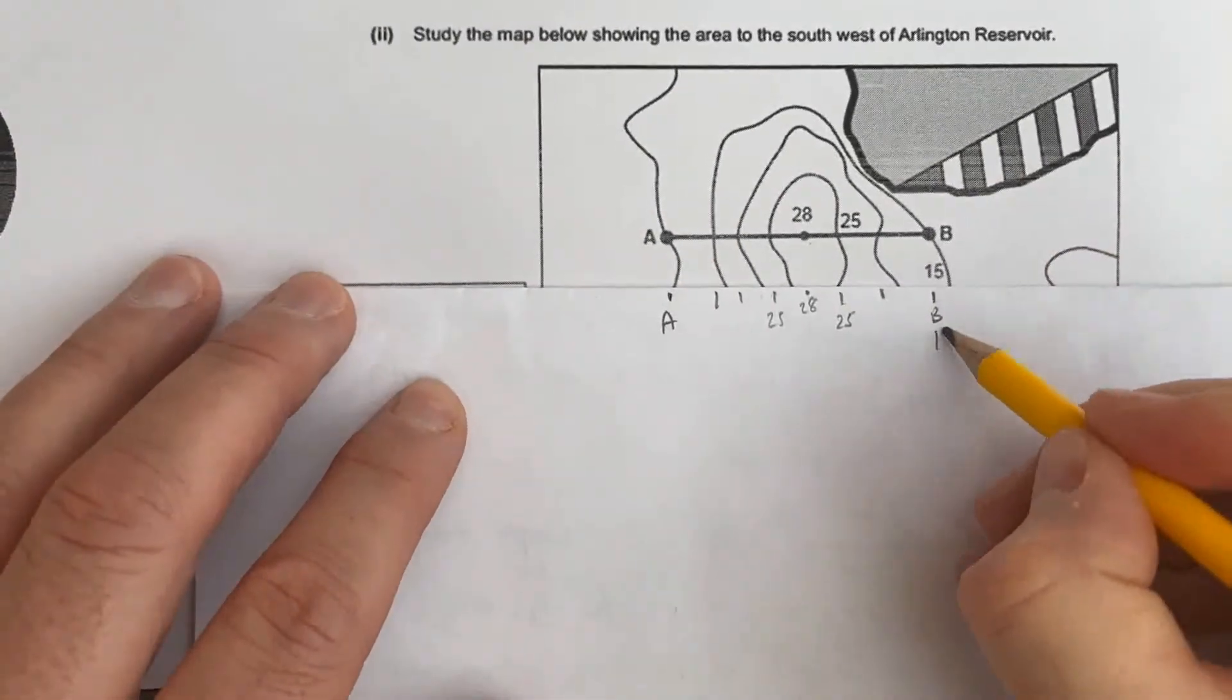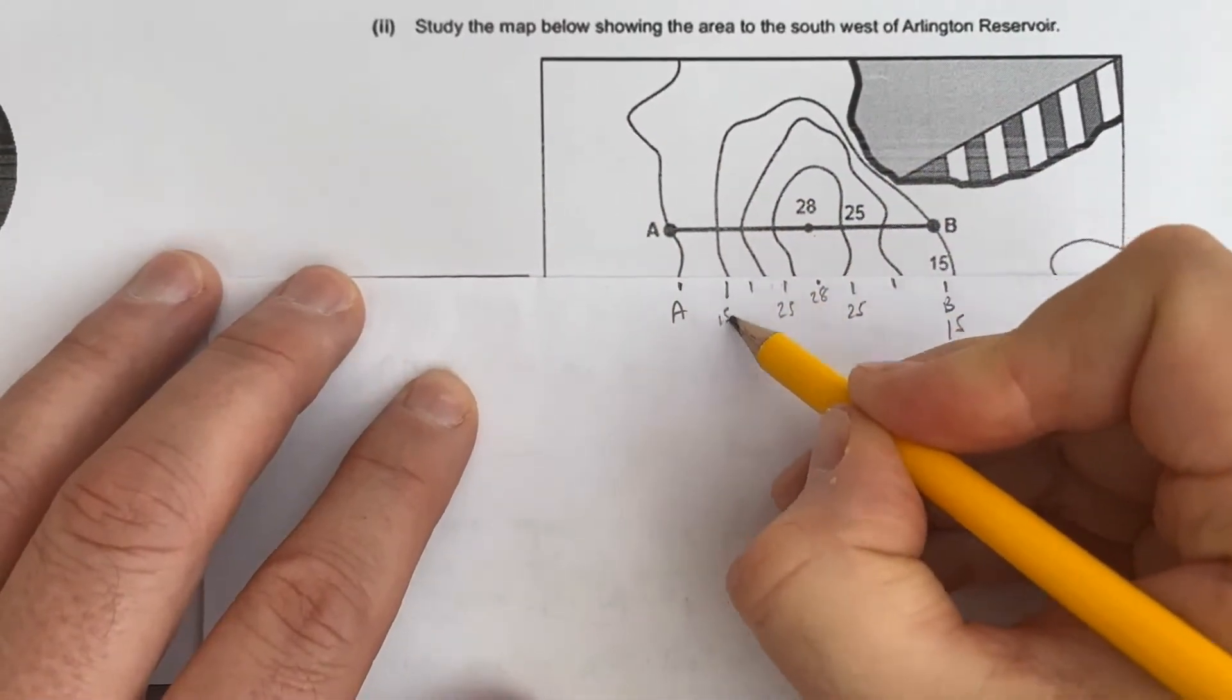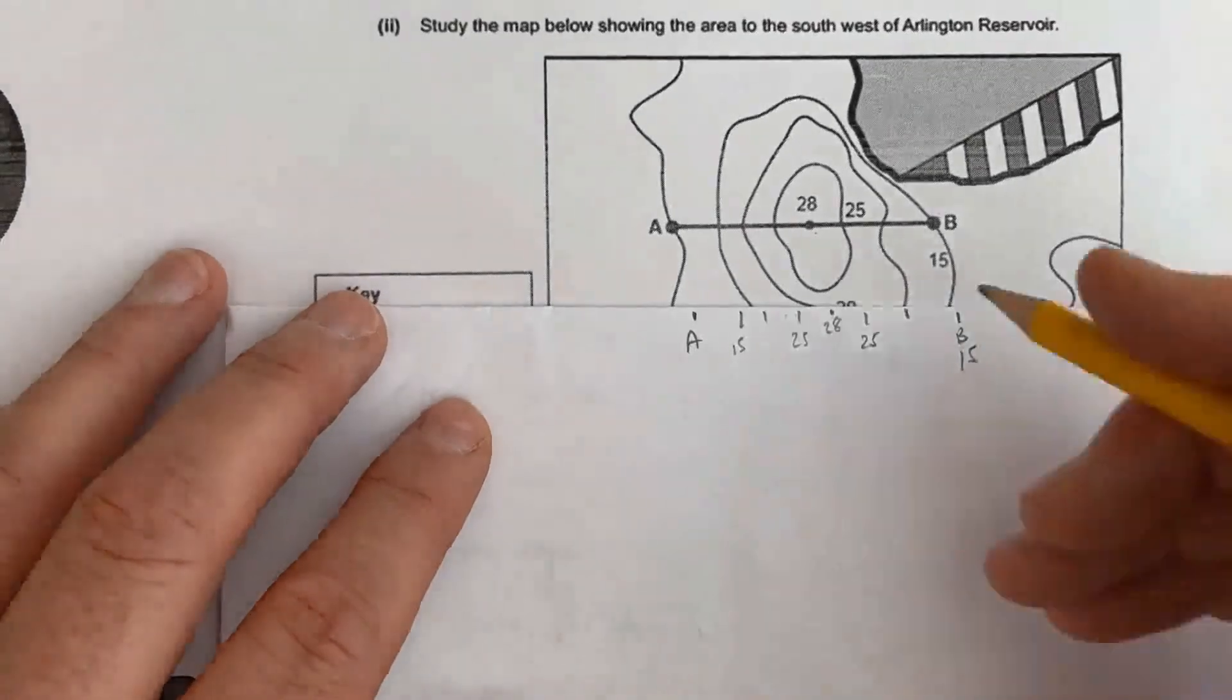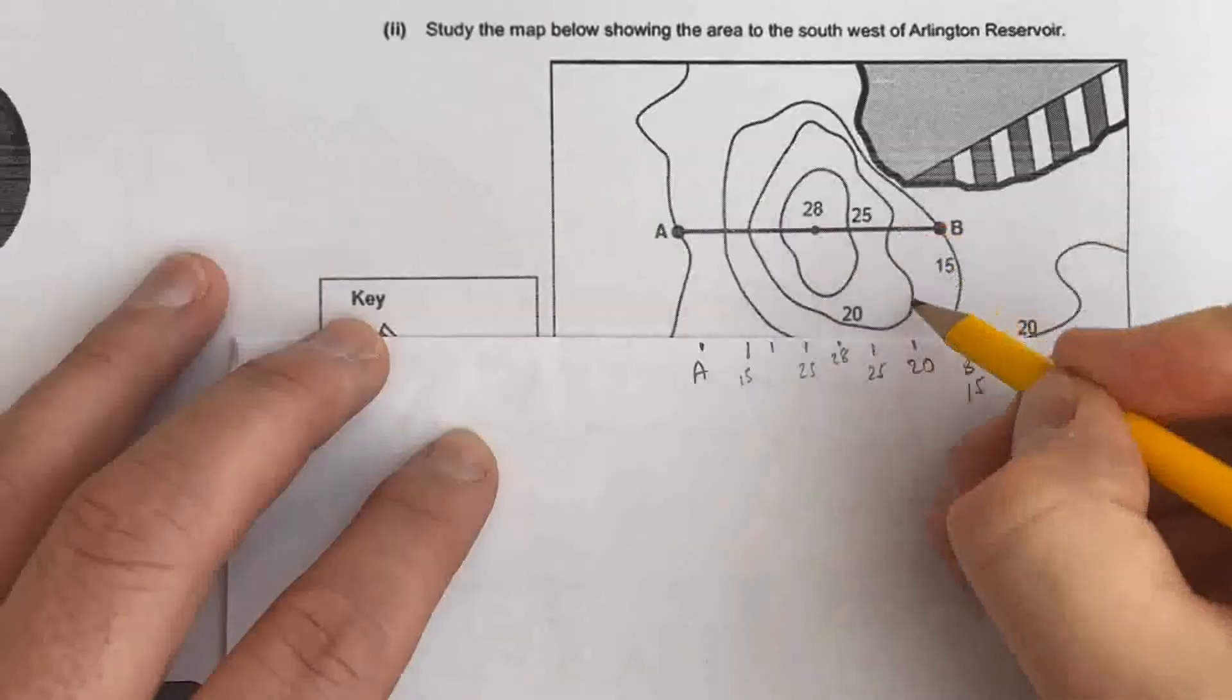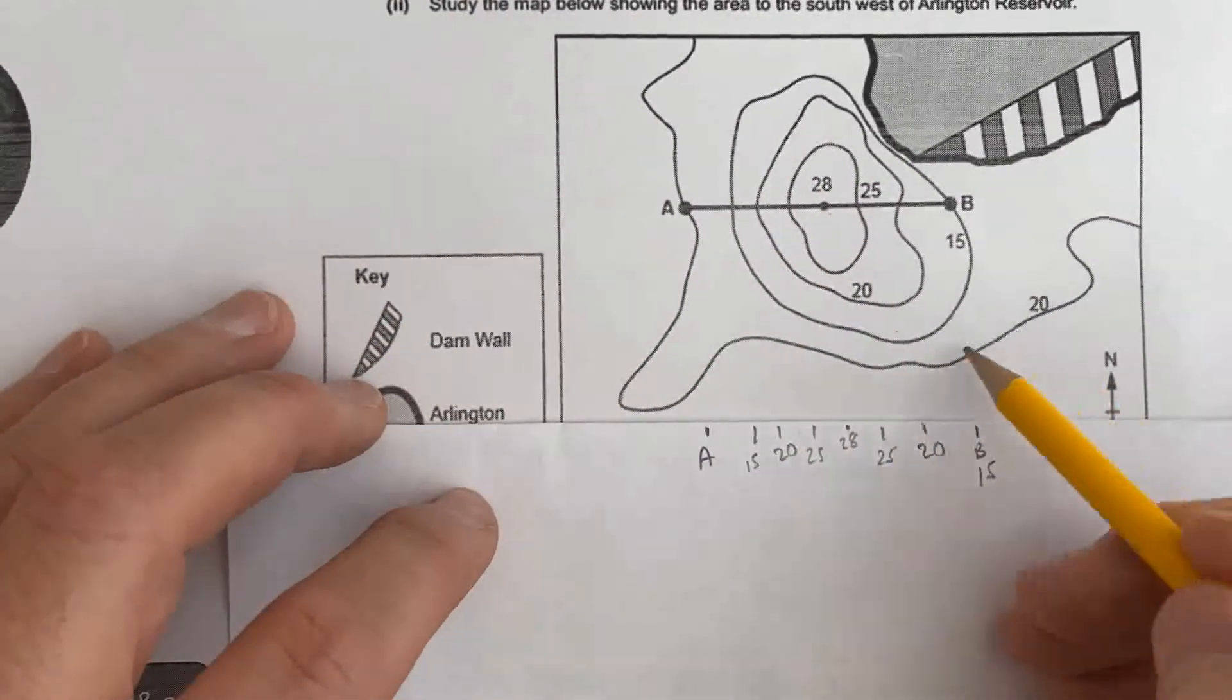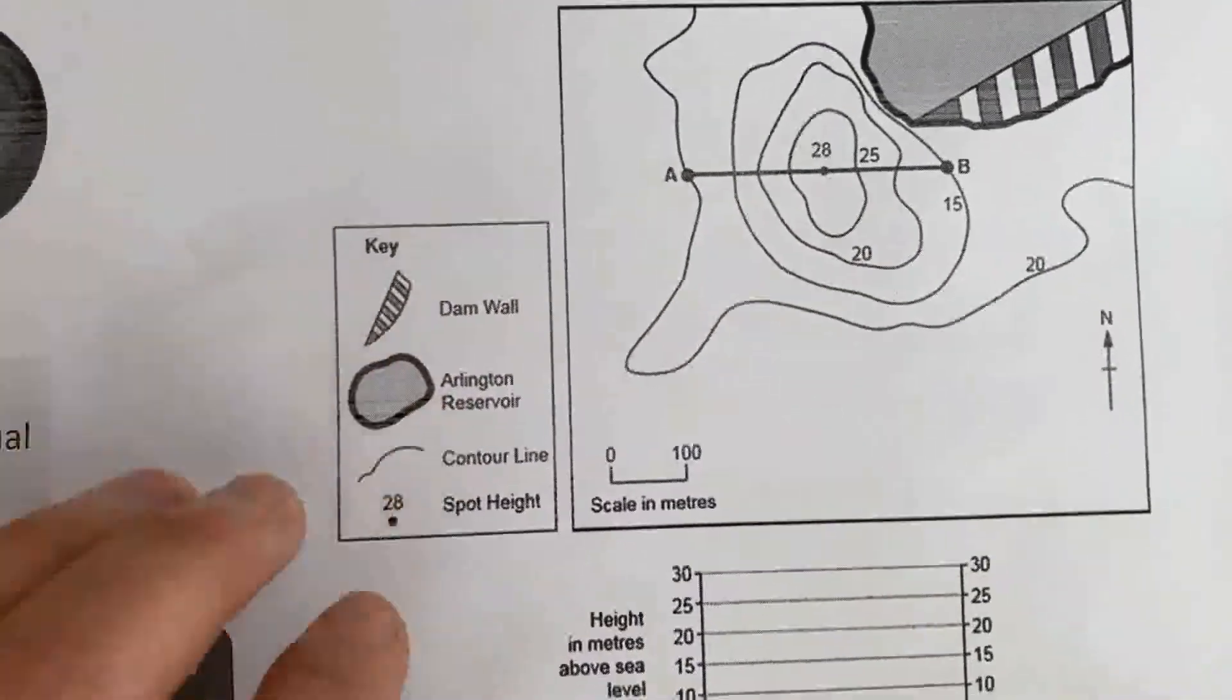I can see that B is 15. This line runs all the way back down to here at 15. I can see therefore this line here is 20. Therefore that one is 20, and I need to know A, which is also 20.